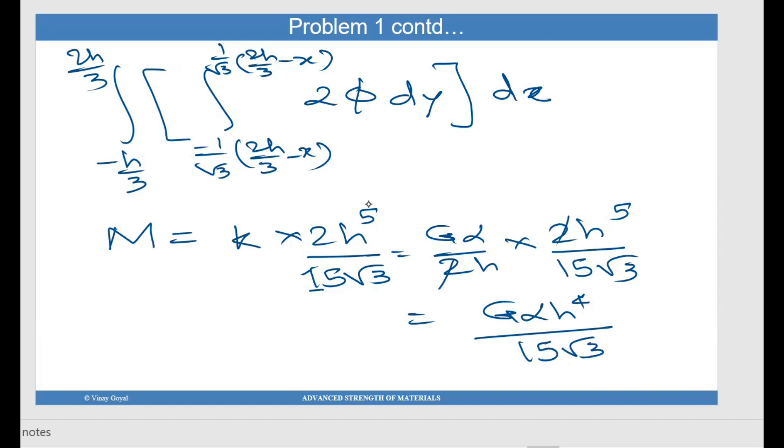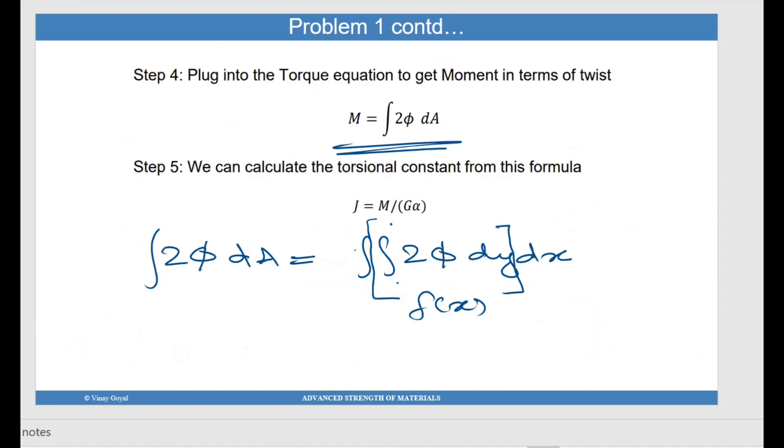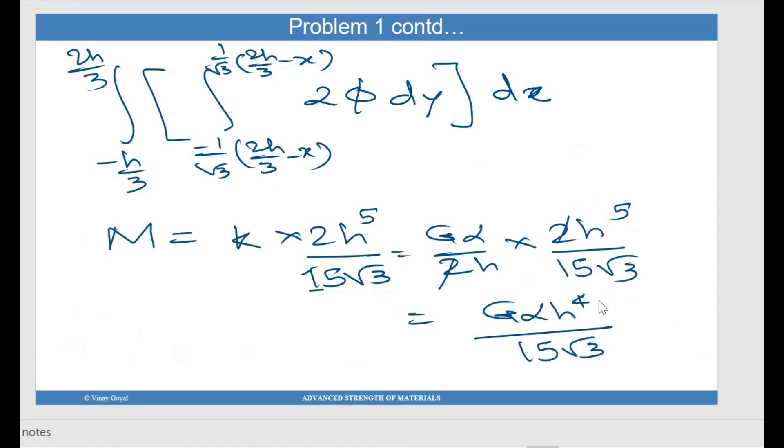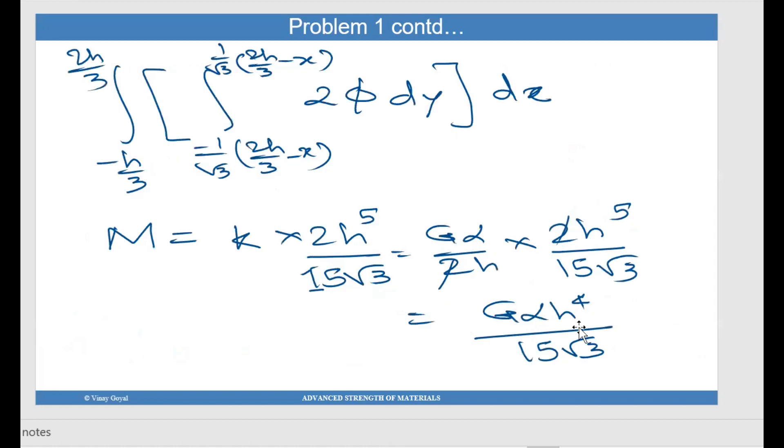So this problem is very similar, almost exactly similar to the problem that you must have done in class where you had x minus a bracket. So just in this problem, a is minus h by 3. That's it. So if you want to go through this problem again, if you want to check your calculations anywhere, then that is the problem you have to go through. So now that you have your m, we can calculate the torsional constant. So torsional constant is basically m by g alpha, that is j. So it'll be h raised to 4 upon 15 by root 3. So all of that you have.